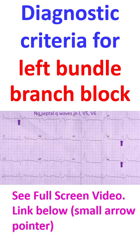No septal Q waves are seen in leads I, V5, and V6. This is due to the absence of the initial left-to-right activation of the interventricular septum, which occurs in the presence of normal conduction in the left bundle branch.